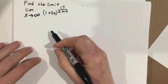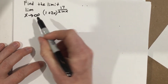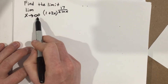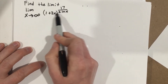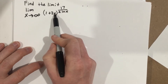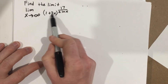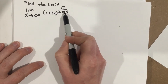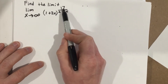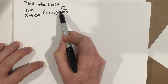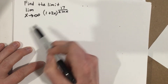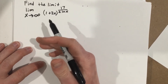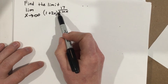This is problem number two from our homework in section 4-5. It wants to find the limit as x approaches infinity for this function. If I plug in infinity, I get one plus two times infinity, that's just going to be infinity, to the 17 over two natural log infinity. I end up with infinity to the zero power, and we know that is indeterminate.